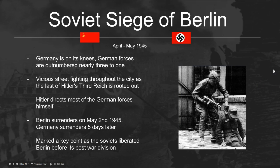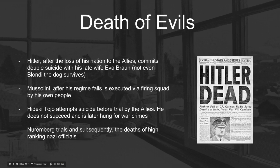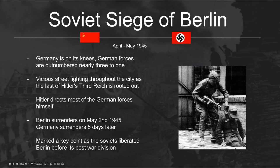Coming towards the end of the war, in April and May of 1945, comes the Soviet siege of Berlin. The Soviets had made their way all the way into German heartland. Germany was on its knees, and German forces were outnumbered nearly three to one as the Soviets crossed into Berlin. It entailed vicious street fighting — literally pulling Germans out of homes, manholes, and anywhere else they could hide. The young and the old were forced to fight for the German Reich. Berlin surrendered on May 2nd, 1945, and Germany surrendered totally and unconditionally five days later. This marks a key point as the Soviets liberated Berlin before its post-war division.